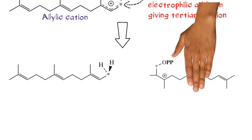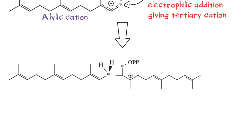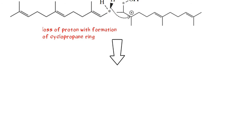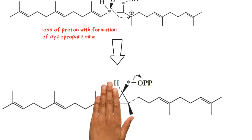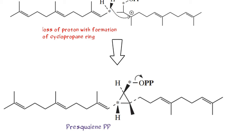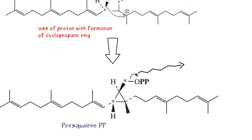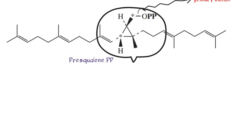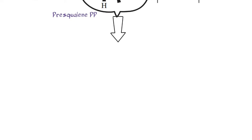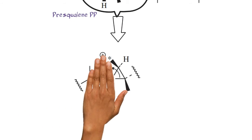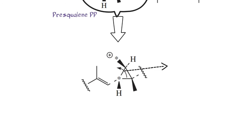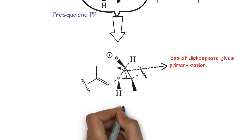Loss of proton happens with formation of a cyclopropane ring. Then loss of diphosphate gives a primary cation to the structure. A 1,3-alkyl shift then generates the cyclopropane ring and a more favourable tertiary cation.